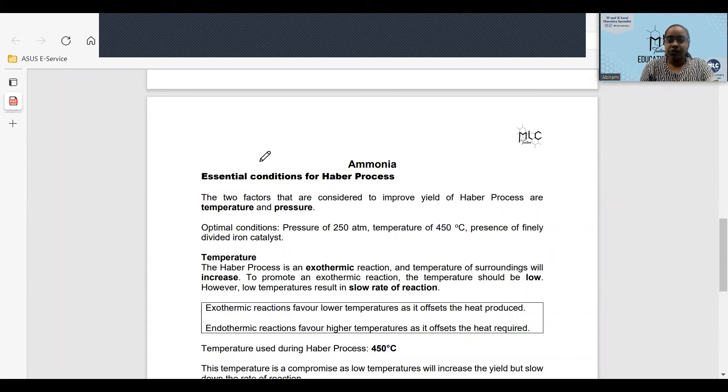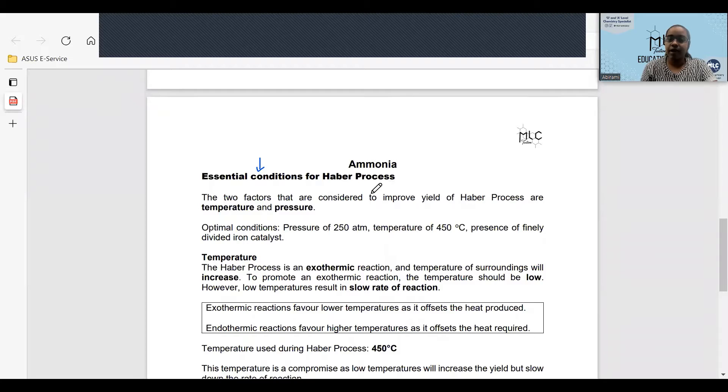Today under ammonia, we're going through the essential conditions needed for the Haber process. The two factors that are considered to improve the yield are temperature and pressure.